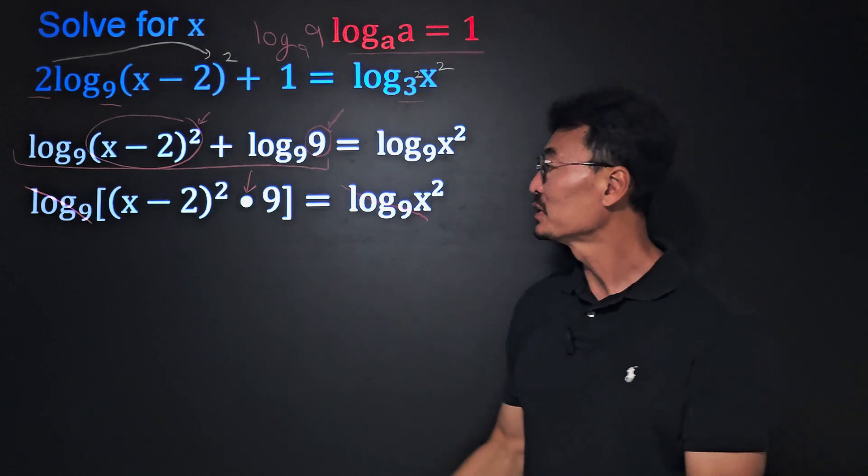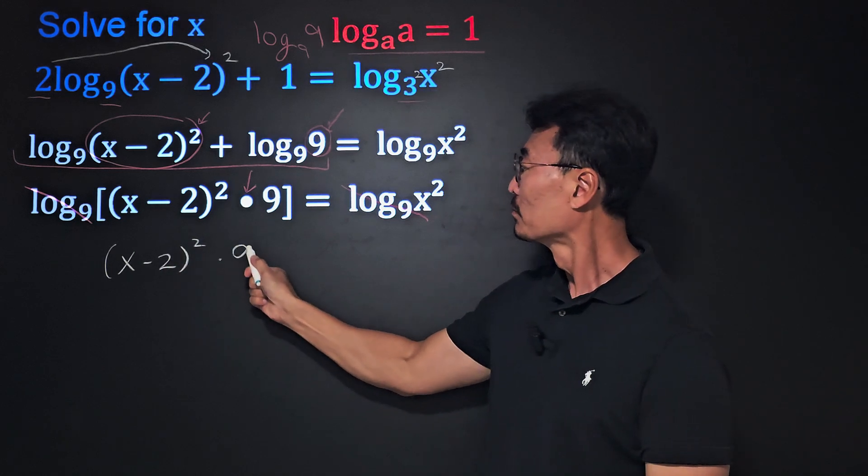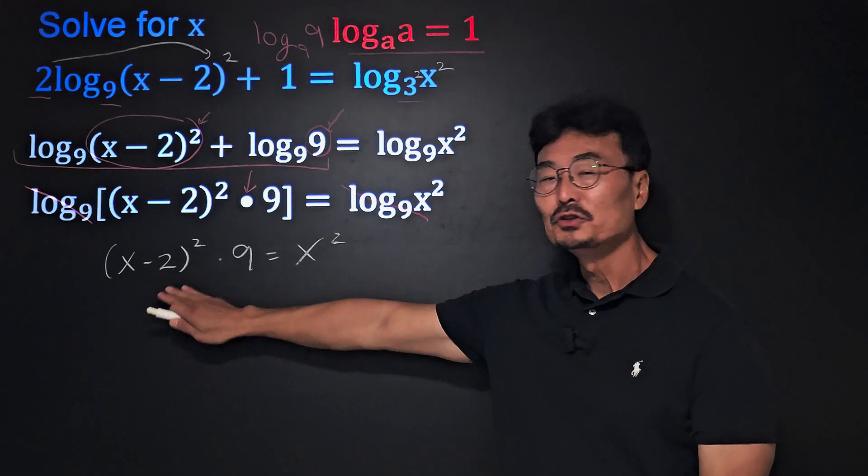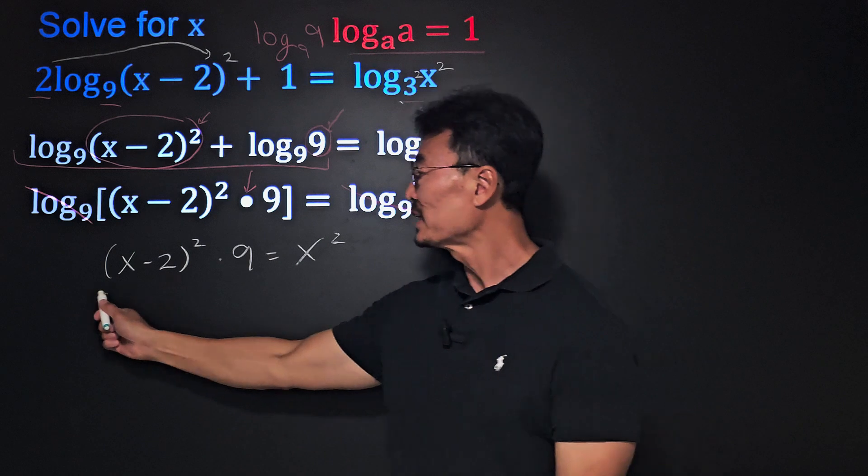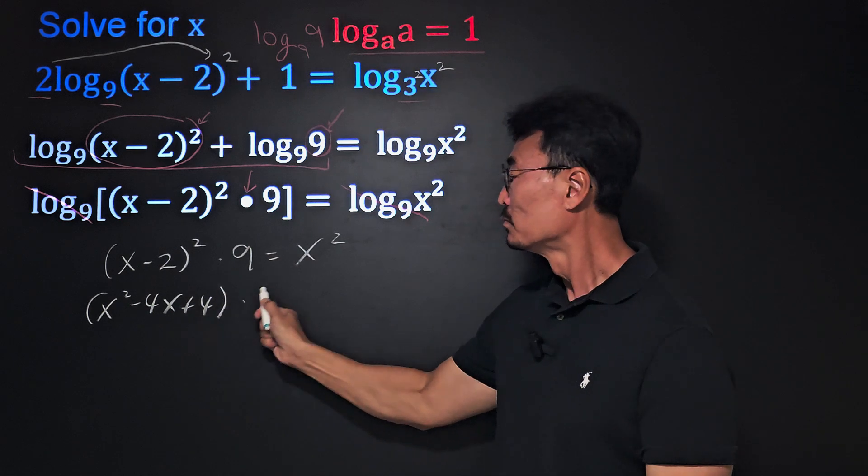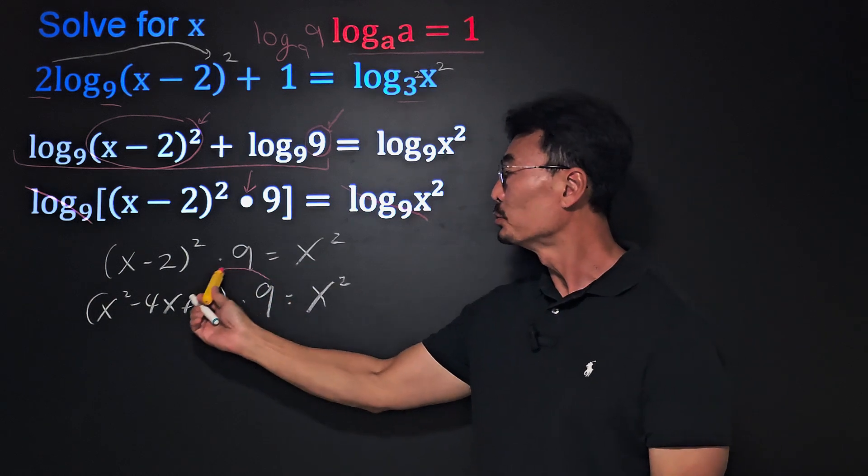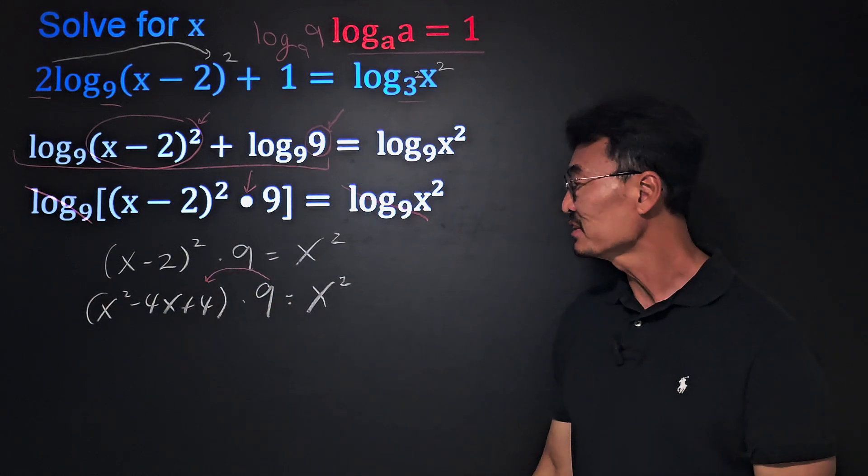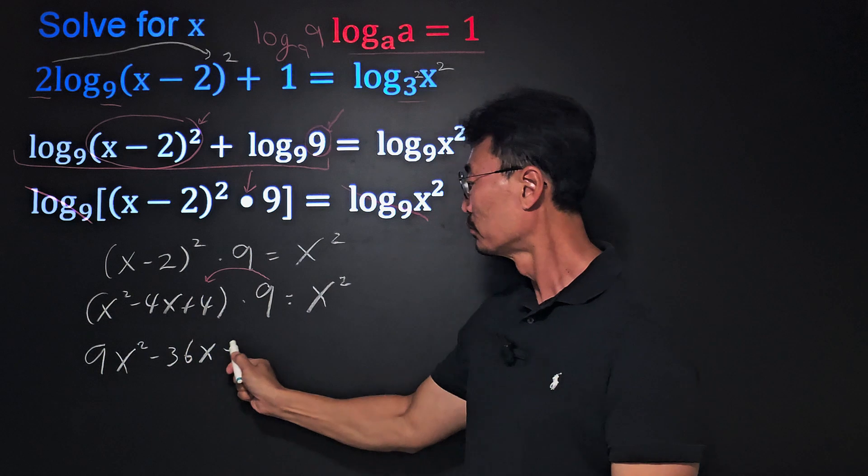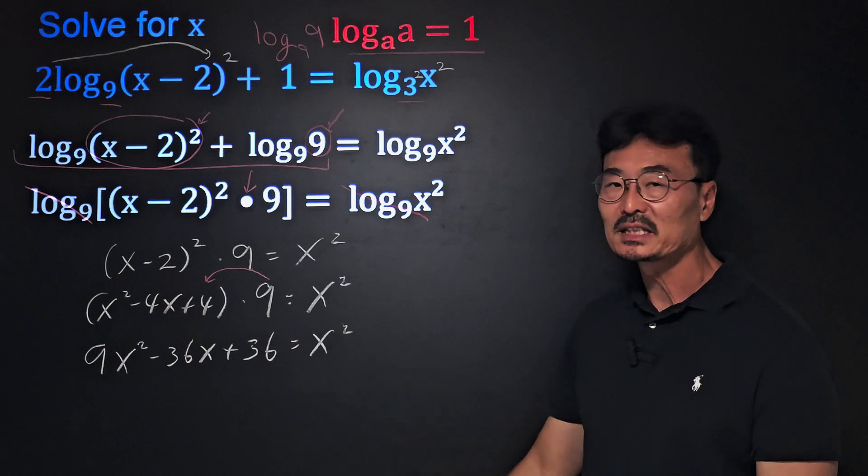And end up with the equation right here. And if we do x minus 2 square, we get x squared minus 4x plus 4. And we'll go ahead and take that 9, distribute it into the parentheses, which gives us 9x squared minus 36x plus 36. And finally we'll go ahead and subtract the x squared.